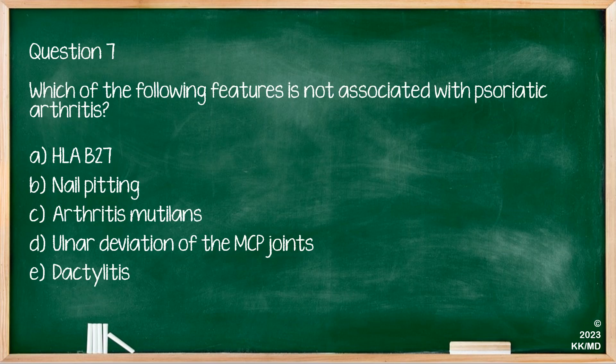Question seven: which of the following features is not associated with psoriatic arthritis? The options are HLA-B27, nail pitting, arthritis mutilans, ulnar deviation of the MCP joints, or dactylitis. As seen in a previous question, ulnar deviation of the MCP joints is usually seen in rheumatoid arthritis and not classically in psoriatic arthritis. All of the other answers may be associated with psoriatic arthritis.